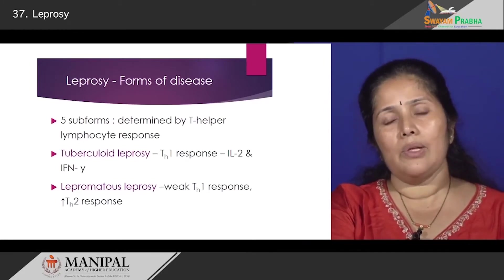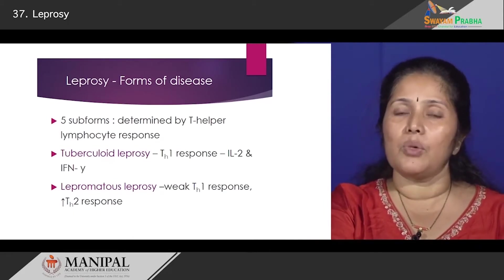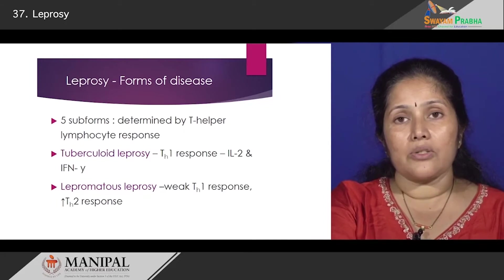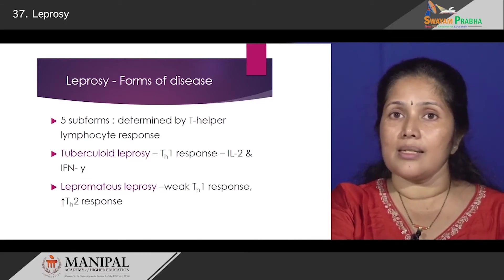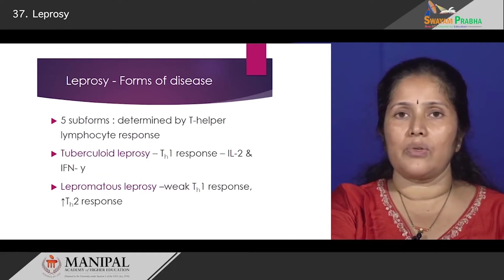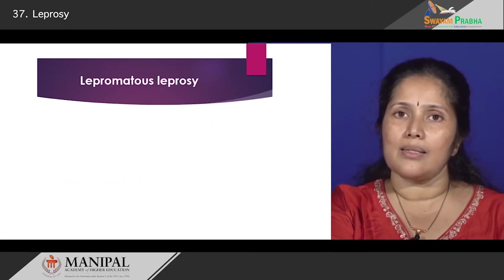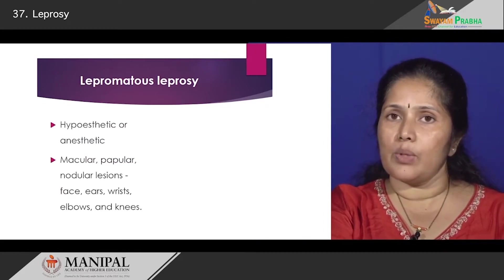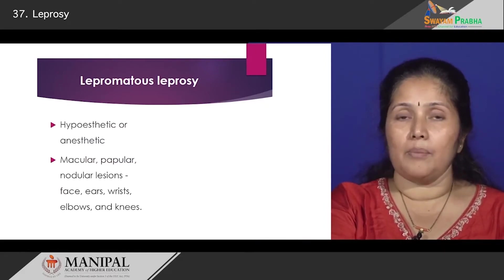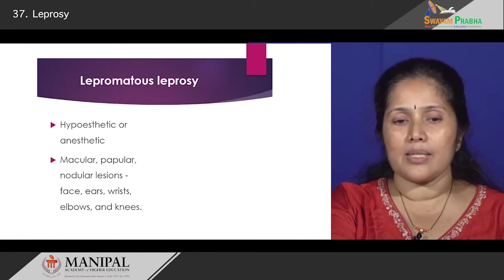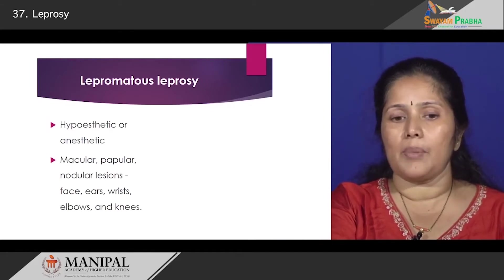We will now look at the clinical and morphologic features of both extreme ends — lepromatous leprosy and tuberculoid leprosy. First, let us look at lepromatous leprosy. Most of these patients will present with hypo-anaesthetic patches, meaning that sensation is either low or absent — either hypo-anaesthetic or totally anaesthetic patches.